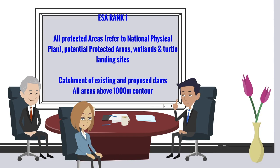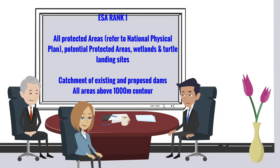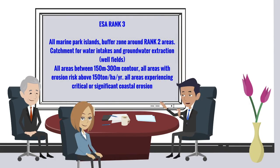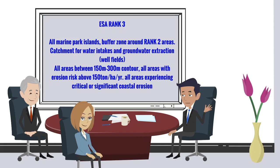The areas defined as environmentally sensitive as demarcated in IP8 of the National Physical Plan are: ESA Rank 1 includes all protected areas, potential protected areas, wetlands, and turtle landing sites; catchment of existing and proposed dams; and all areas above 1000m contour. ESA Rank 2 includes all other forests, corridors linking important protected areas, buffer zones around Rank 1 areas, and all areas between 300m–1000m contour. ESA Rank 3 includes all marine park islands, buffer zones around Rank 2 areas, catchment for water intakes and groundwater extraction well fields, all areas between 150m–300m contour, all areas with erosion risk above 150 tons per hectare per year, and all areas experiencing critical or significant coastal erosion. All sources from the National Physical Plan, April 2005.